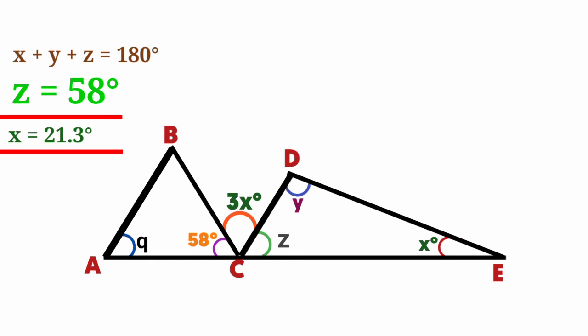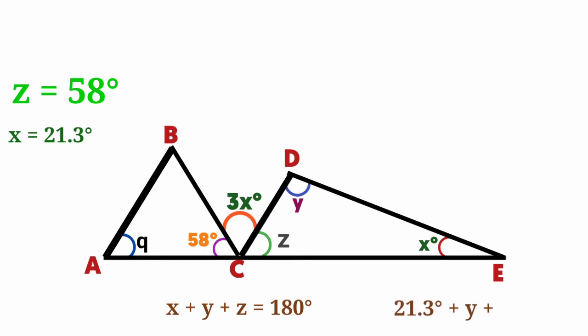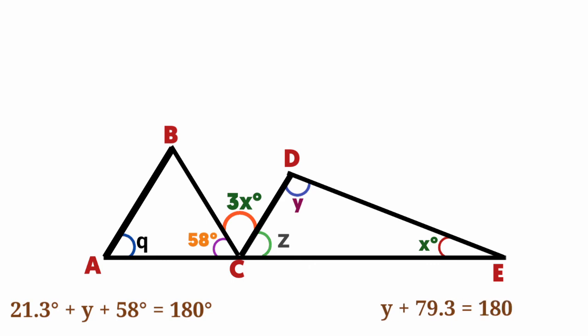We find the value of x to be 21.3 degrees and Z to be 58 degrees. Let's come back to our initial equation that says x plus y plus z equals 180 degrees. Substitute the values: 21.3 plus y plus 58 degrees equals 180 degrees. Collect the like terms and add them up, so y plus 79.3 equals 180 degrees.